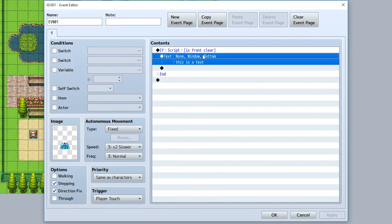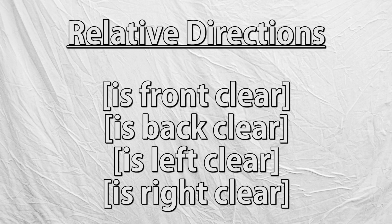Let's review all the available scripting commands. To check a direction relative to where the event is looking, use the following: 'is front clear', which checks whether the tile in front of the event is clear; 'is back clear', which checks whether the tile behind the event is clear; 'is left clear', which checks the tile to the left of where the event is looking. Keep in mind you've got to make sure all these are in square brackets to represent they are special codes within your scripting.